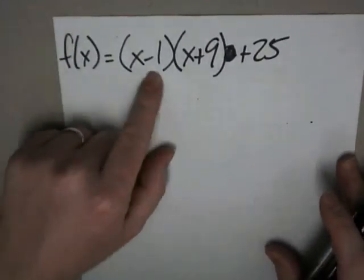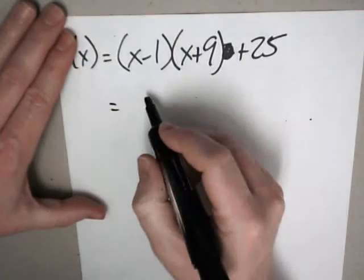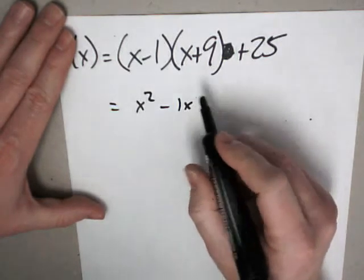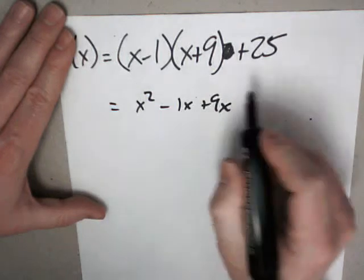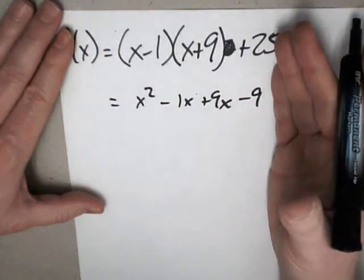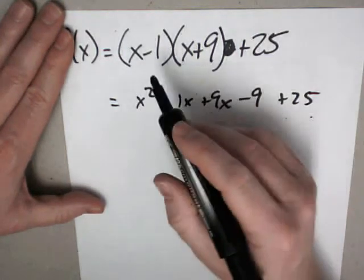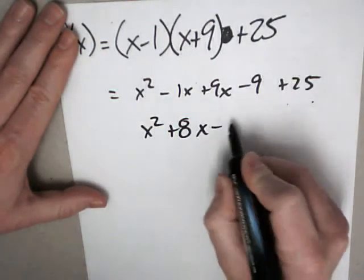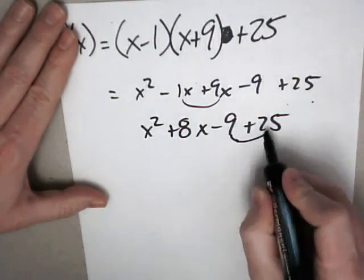When it looks like this, it's a lot easier if you just multiply this out and get what it should be. So it would be x squared minus 1x plus 9x minus 9 plus 25. So I just distributed the x and distributed the negative 1. I kind of did it backwards. But anyway, it's the same thing. So x squared plus 8x minus 9 plus 25. So I put those together.